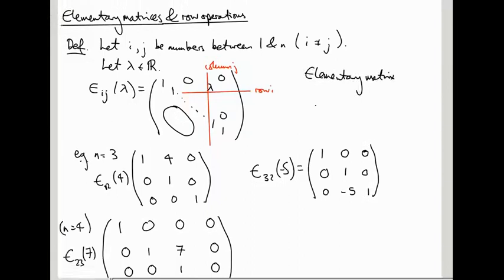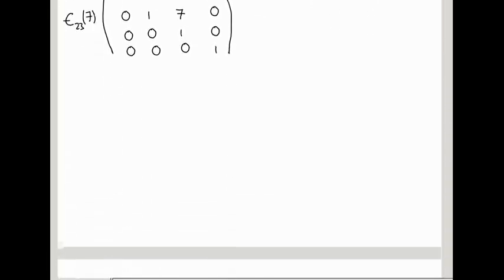So this is called an elementary matrix. And I'm going to call them elementary matrices of type 1. They're going to correspond to row operations of type 1. This is not standard terminology, but it's going to be useful for comparison to our earlier notes. In what sense do they correspond to row operations of type 1?